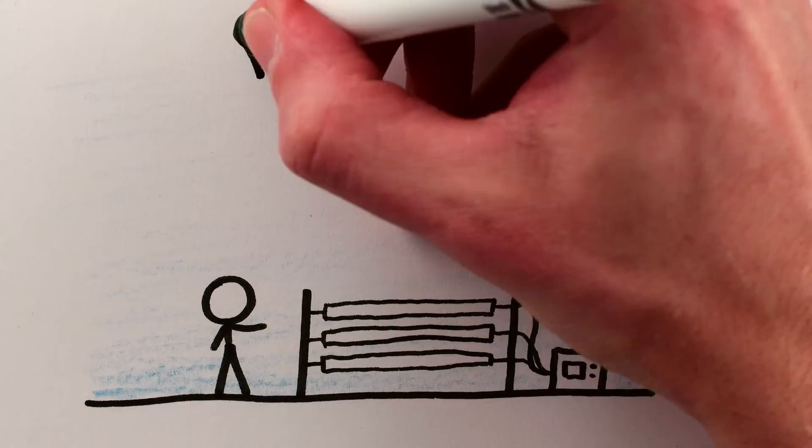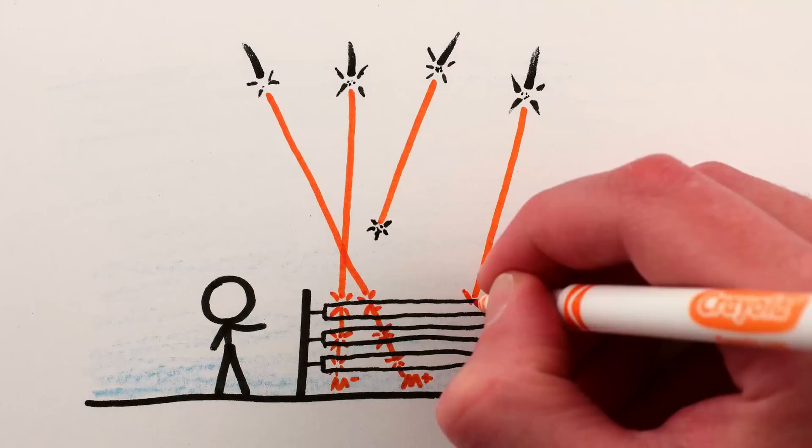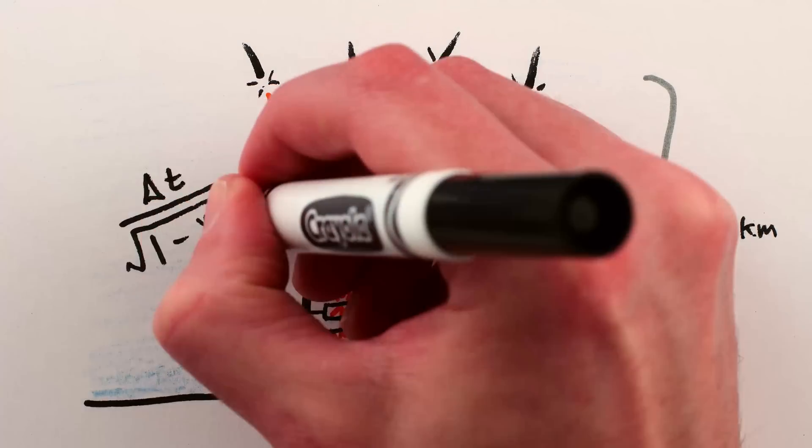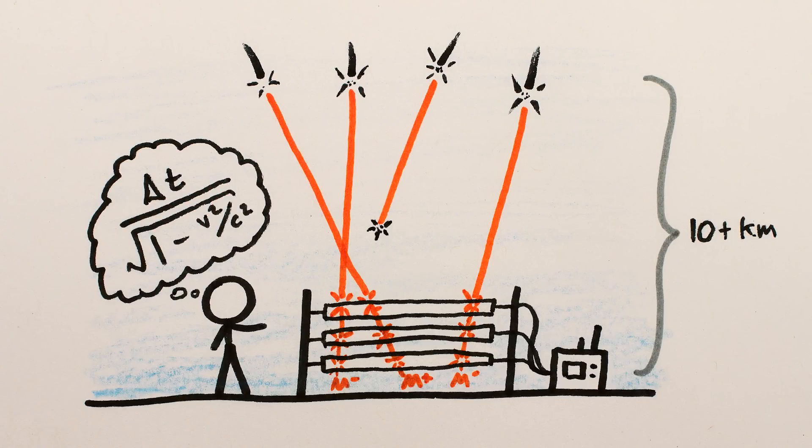So from our perspective, the fact that so many cosmic ray muons reach our detectors on the Earth's surface is direct evidence for special relativity and time dilation.